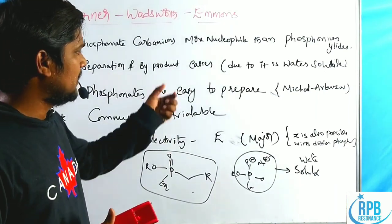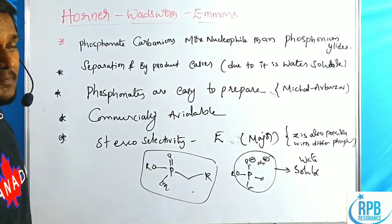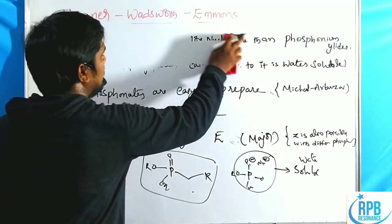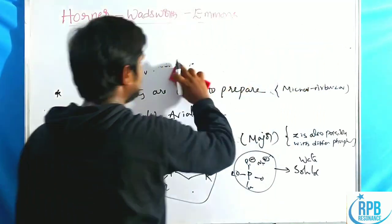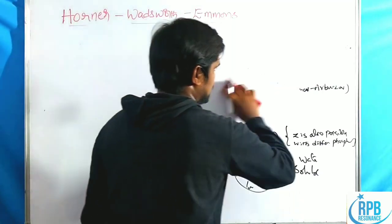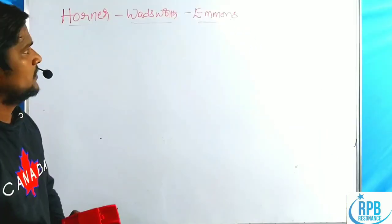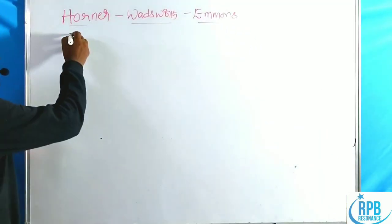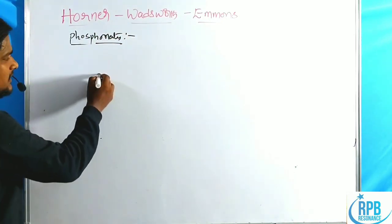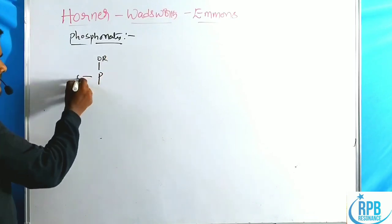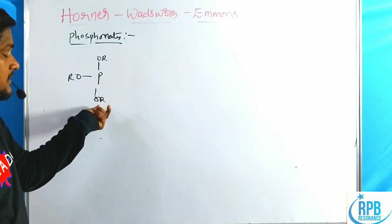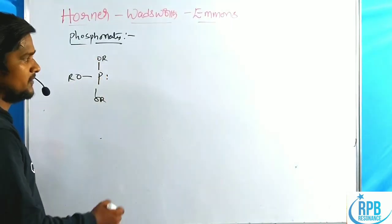Now we will go through the preparation method of phosphonate esters. Generally, we start with trialkyl phosphines. This is a trialkyl phosphine where phosphorus has a lone pair of electrons.